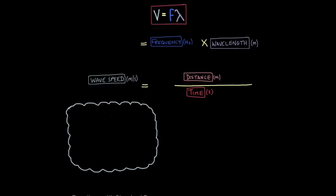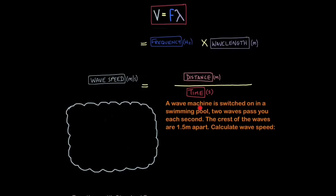First question. A wave machine is switched on in a swimming pool. Two waves pass you each second. The crest of the waves are 1.5 meters apart. Calculate the wave speed.